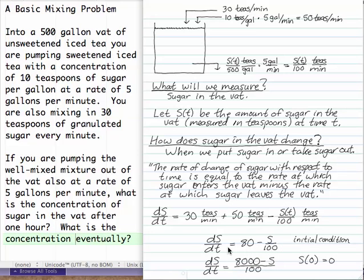Or simplifying, just DSDT is 80 minus S over 100. Common denominator, DSDT is 8000 minus S over 100. And the initial condition is S of 0 is 0. At time 0, there's no sugar in the tank.